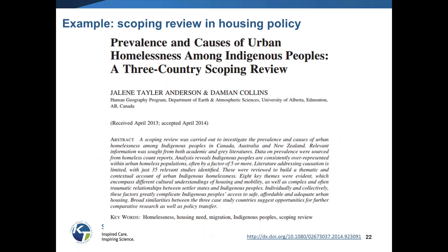Here's another scoping review on housing policies, looking at the prevalence and causes of urban homelessness among indigenous people. We see that, even with Kefayat's example, sometimes we start off with a broad research question — the scoping review — and then we realize that now that we know what's been done in the field, we can do a more targeted question and conduct a systematic review. So it can be a two-stage process where you start with a large, broad scoping review and then end up with a systematic review, which it sounds like Kefayat and her team are currently working through.